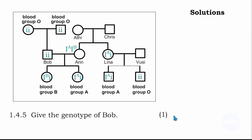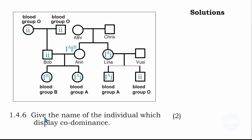The next question asks: give the genotype of Bob. We have already determined that Bob's genotype is blood type O — small i and small i. The following question asks: give the name of the individual who displays codominance. Codominance is shown by someone with blood type AB. That individual is N, whose genotype contains allele I superscript A and allele I superscript B. Therefore, the one who displays codominance is N.